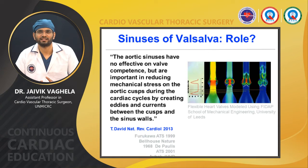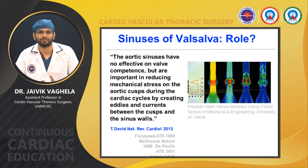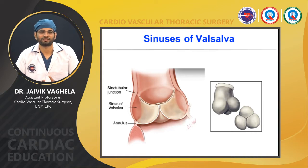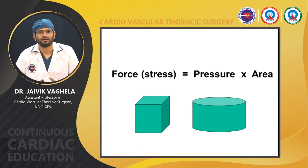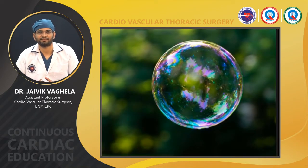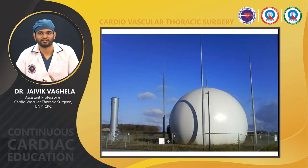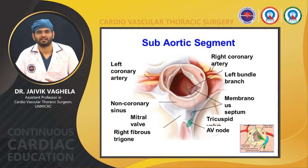The sinus of Valsalva plays an important role in the closure of the aortic valve. The aortic sinuses have no direct effect on wall components, but they reduce mechanical stress on the aortic cusp during the cardiac cycle by creating eddy currents between the cusp and the sinus wall. The sinus of Valsalva is circular in shape, providing more surface area, which reduces wall stress. In the sub-aortic segment, between the non-coronary cusp and right coronary cusp, the membranous septum and right fibrous trigon give rise to the central fibrous body where the AV node is located.